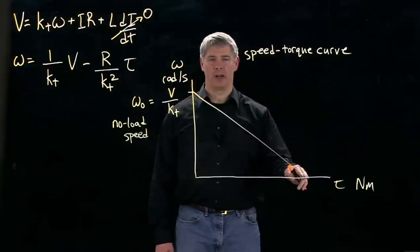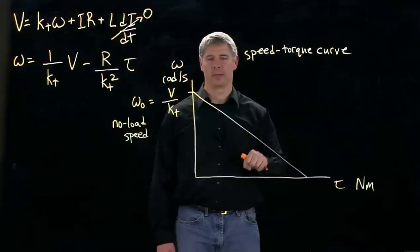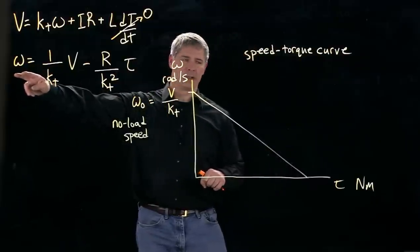No load because the output shaft is not creating any torque. And then down here we have stall, so that's where the output shaft is prevented from moving. Perhaps we grab onto it and prevent it from moving. And in that case, this is equal to zero, omega is equal to zero.